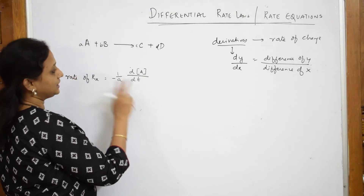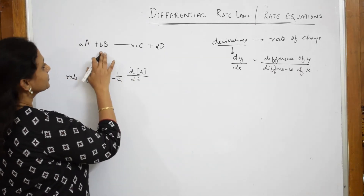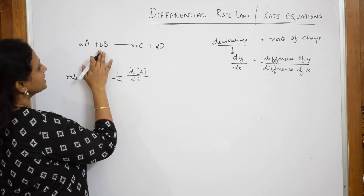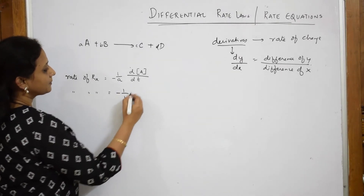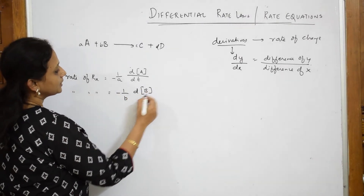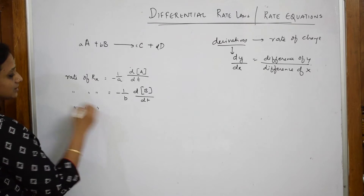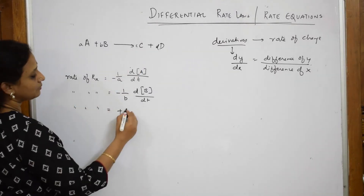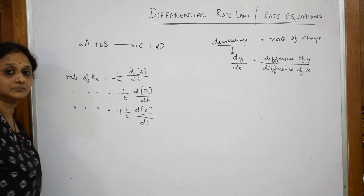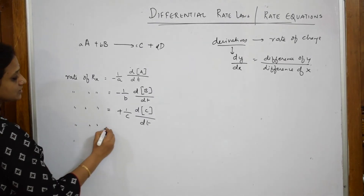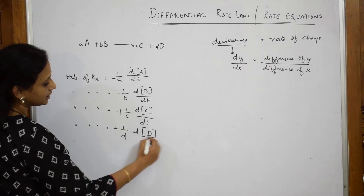Rate of change, d[A] by dt. Now, if I speak about B also, the same thing. So the rate of reaction for B is minus 1 by b, d[B] by dt. If I have to write for the product, rate of the reaction is equal to plus 1 by c, d[C] by dt. And for D, rate of the reaction is equal to plus 1 by d, d[D] by dt.